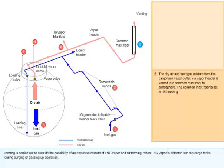The common mast riser is set at 150 millibar gauge. The expelled vapor from the vapor outlet can also be returned to shore by connecting the vapor manifold to shore pipelines.